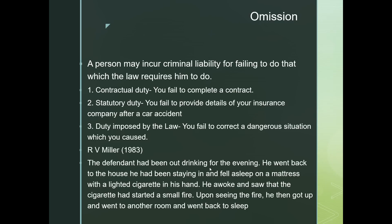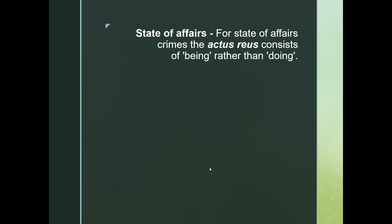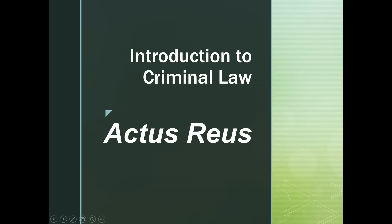In R v Miller, the defendant had been out drinking and went back home and fell asleep on a mattress with a lighted cigarette in his hand. He awoke and saw the cigarette had started a small fire. Instead of putting out the fire, he got up and went to another room to sleep. As a result, he was liable for omission because he failed to remove or extinguish the fire. That is the entirety of actus reus — thank you so much for listening.